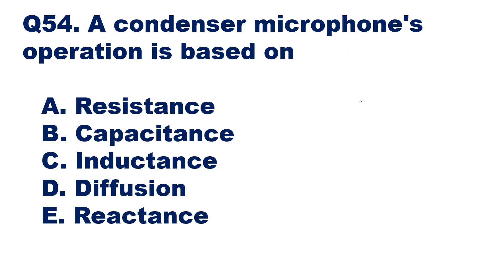Question 54: a condenser microphone operation is based on what? A condenser microphone is also called a capacitor microphone. Its operation is based on change of capacitance, which provides the conversion of sound energy to electrical energy. Option B — capacitance — is the right answer.